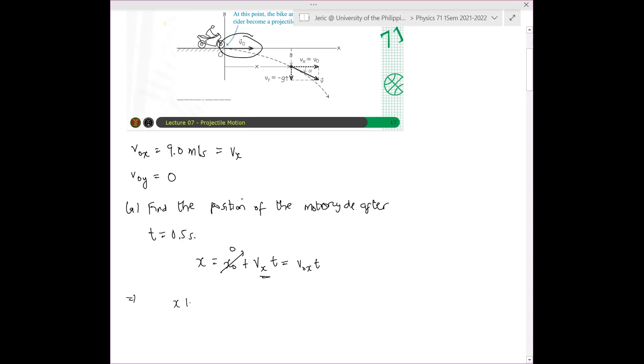This means that x at t equals 0.5 seconds is just 9 meters per second multiplied by 0.5 seconds, which is equal to therefore 4.5 meters.